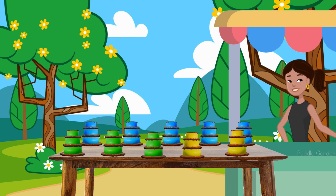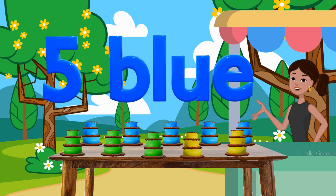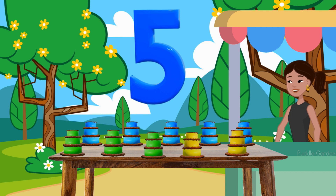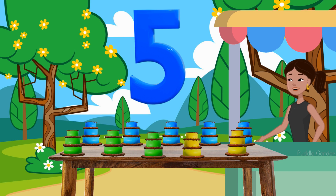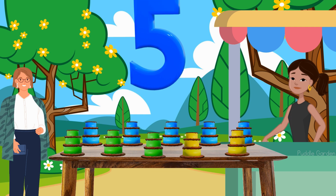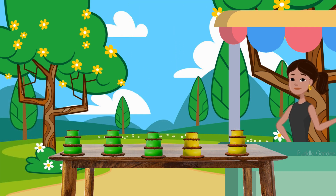Our first order is five blue cakes. So we need five blue cakes. Right now we have 10 and they want to take away five — they are buying five blue cakes. Here's your order.